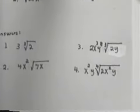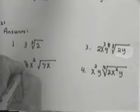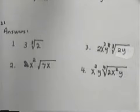Here come your answers. The answer to the first one, 3 times the cube root of 2. The second one, 4x squared times the square root of 7x. I'm just still mistaking that one, it shouldn't be 4x squared, what should it be?